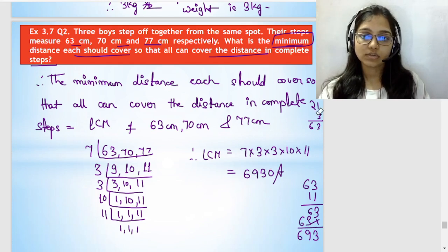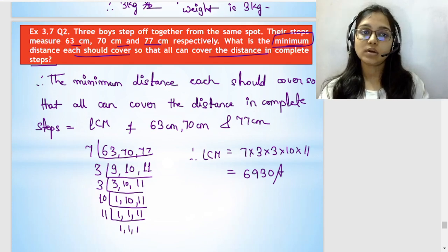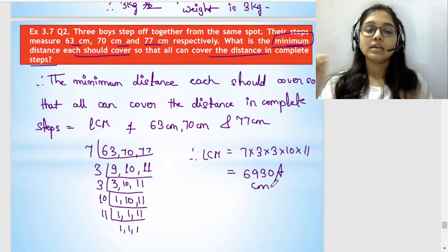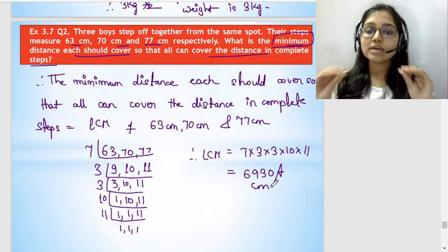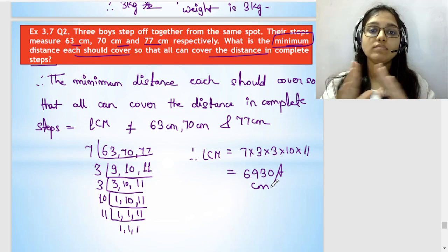So this will be 6930 and this is our answer. 6930, the unit would be centimeter. So 6930 cm they have to cover. The minimum distance, 6930 cm all of them have to cover so that all can complete the distance in complete steps.